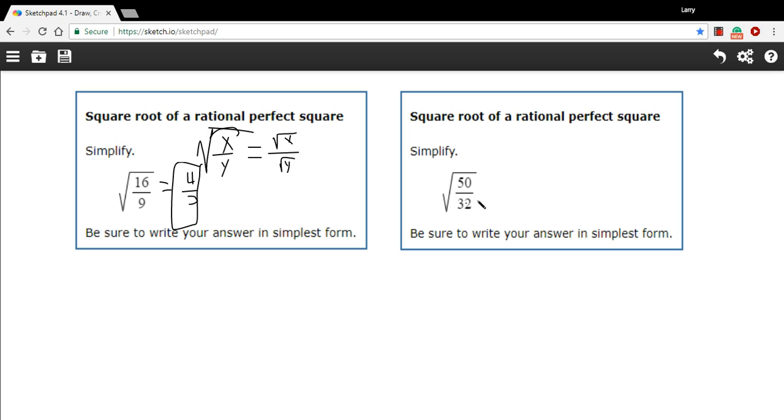This looks a little tougher. We have the square root of 50 over 32, so you might be tempted to take the square root of 50 and then the square root of 32 and you'd get these big long decimals and it'd be kind of messy.